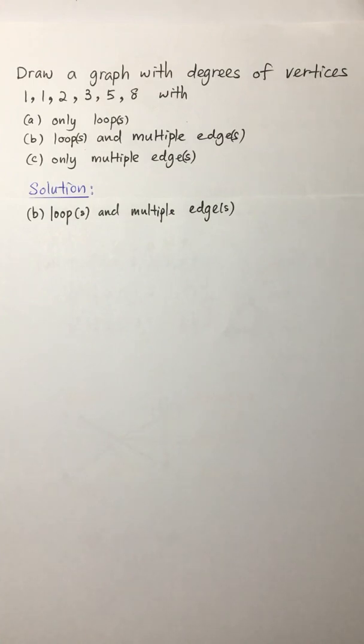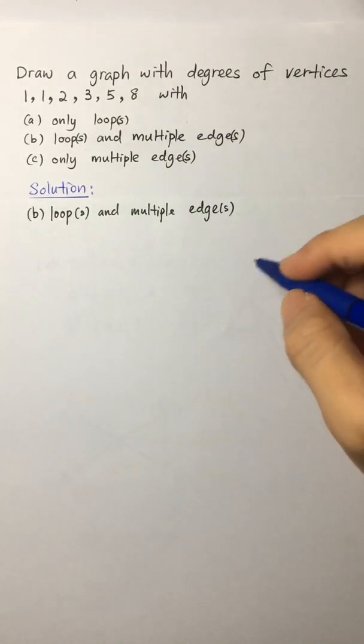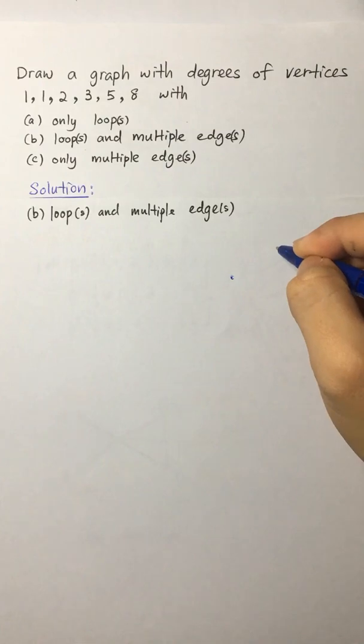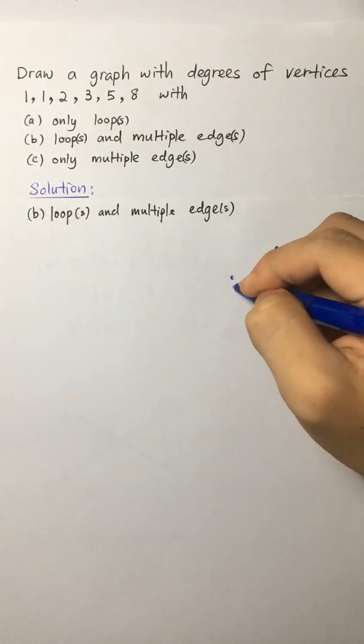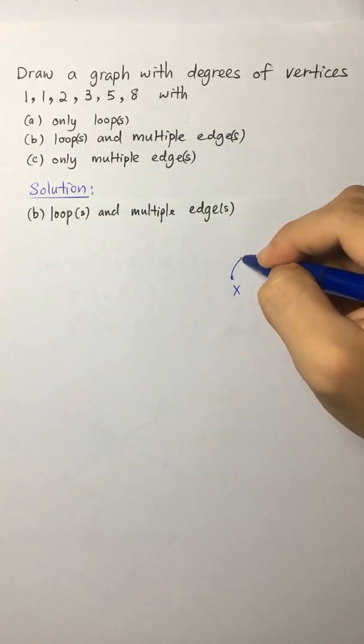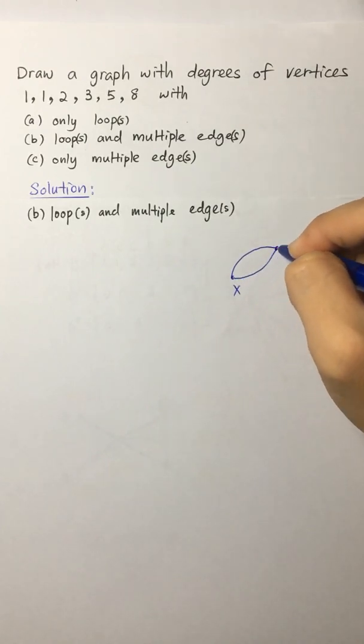Before we start drawing the graph, there's one important thing about multiple edges that I would like to go through first. So let's say we have two vertices. We name it X and Y and a pair of multiple edges connecting to it.